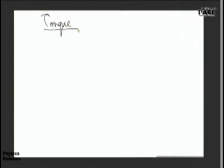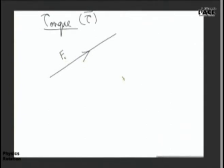The symbol for torque is tau. Please pay attention — it's a vector. If there is any force F₀ in space, and there is any point P about which I want to find the torque of this force, this point P can be any point in space. I want to find the torque of this force about this point.